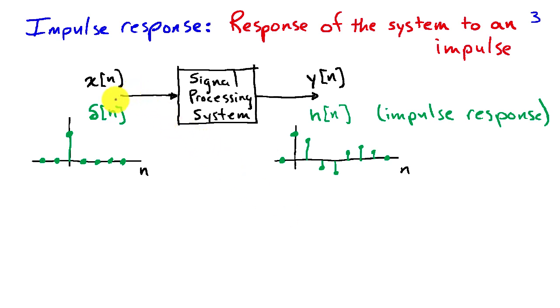The way we obtain that, if I have a system with input x of n and that produces output y of n, in order to get the impulse response, I'm going to see what happens when I put an impulse into the input. So I'll set x of n equal delta of n, and then my output is the impulse response, h of n.